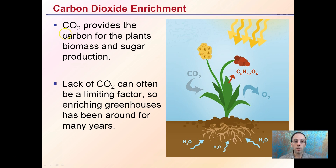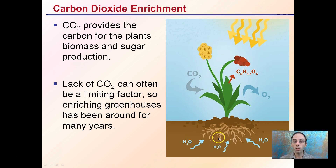Carbon dioxide enrichment: CO2 provides carbon for the plant's biomass and sugar production. That C6H12O6 glucose is important for building components of the actual plant itself, in addition to sugars used for other purposes. The lack of carbon dioxide can often be a limiting factor in this process. Enriching a greenhouse or growth facility with CO2 has been around for many years, because it can directly impact plant growth, assuming water and light are at sufficient levels.